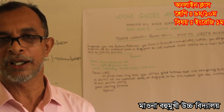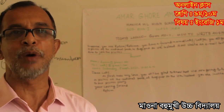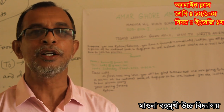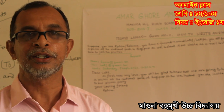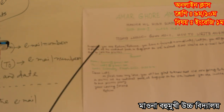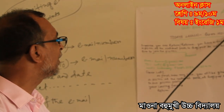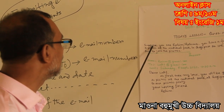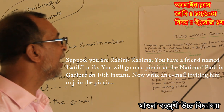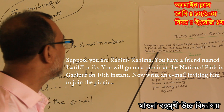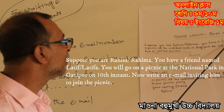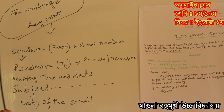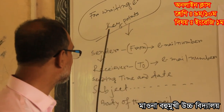Now we are in the age of science. In ultra-modern Bangladesh, which is fully digitalized, we can use an Android mobile to write an email and inform your friend at a glance. So today's lesson is question number 11 — how to write an email. Suppose you are Rohim or Rohima, and you have a friend named Lotif or Lotifa. You will go on a picnic at the national park in Gazipur on the 10th instant. Now write an email inviting him to join the picnic.